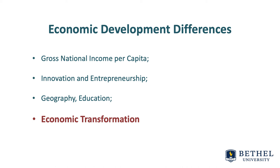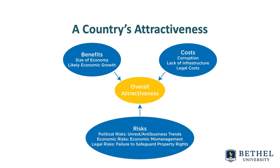In many nations, economic activity is still in the hands of state-owned enterprises, stifling economic development. The selling of state-owned enterprises may not be enough to guarantee economic growth — it must be paired with general deregulation and the opening of the economy. Finally, economic transformation to a well-functioning market economy requires laws that protect property rights and provide mechanisms for contract enforcement. Every organization must weigh the benefits, costs, risks, and overall attractiveness of entering or expanding into a foreign market.